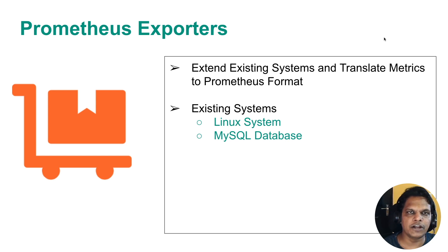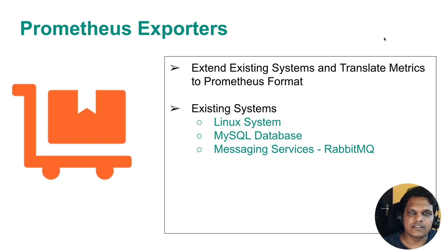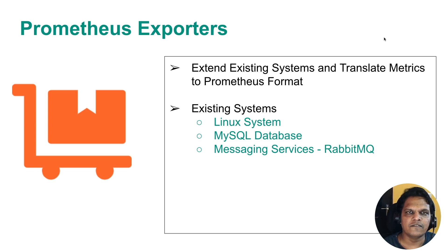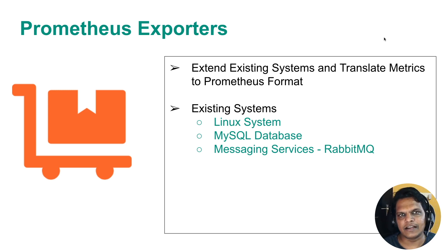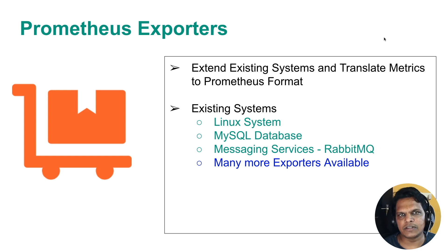You may have databases like MySQL, MongoDB, or PostgreSQL, or messaging services like RabbitMQ or Apache Kafka — any number of systems already running in production. When you have these existing systems, you don't need to build anything new. You just need to use exporters to export the statistics from these systems and serve that data to Prometheus, which will then scrape it from the targets.